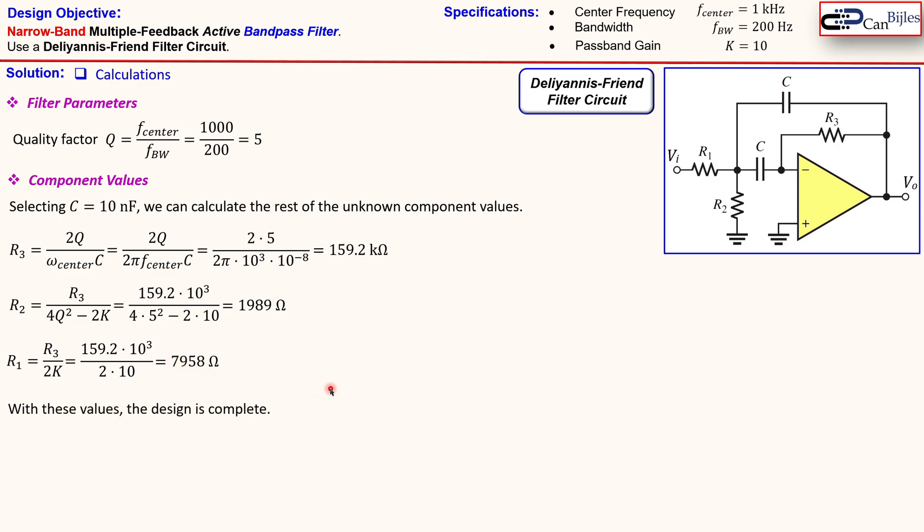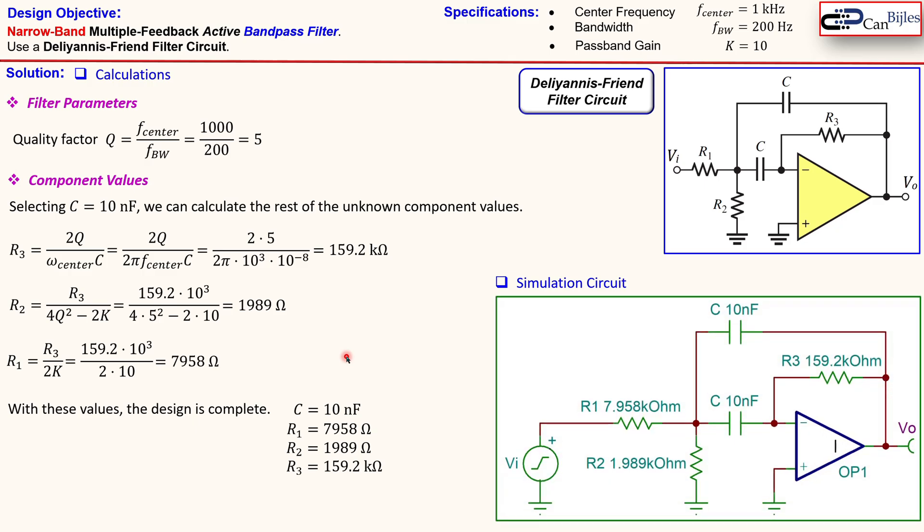Now with these values our design is complete so we have now the four components here: C, R1, R2 and R3. And our simulation circuit we will then use in order to check this calculation is then shown here. You see the operational amplifier, the resistors R1, R2 and R3 and the two capacitors each 10 nF.